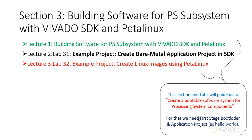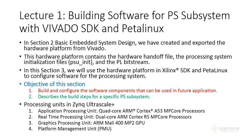In section 3, we need to have a First Stage Bootloader and application project. The FSBL project is available in SDK, so we are going to create some FSBL projects using a template there. We will include the application project created in the previous section — that is, the hello world application project — and finally create the custom bootable files. Lecture 1 tells us about utilizing hardware definition files for creating software for processing subsystems.